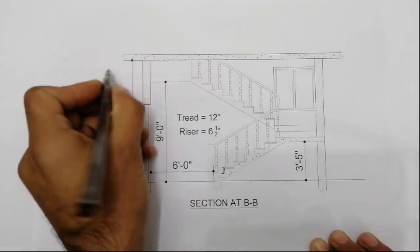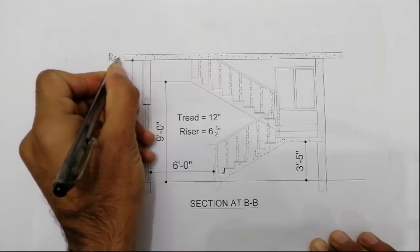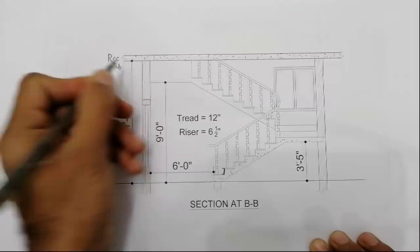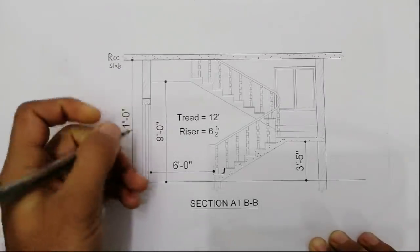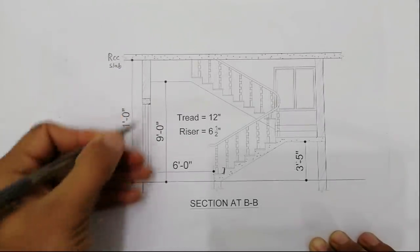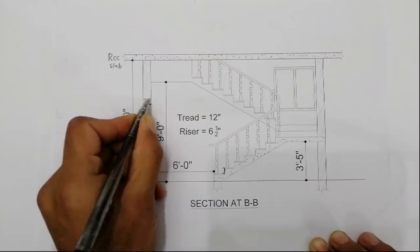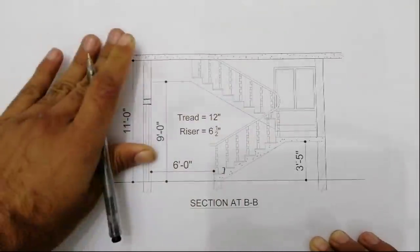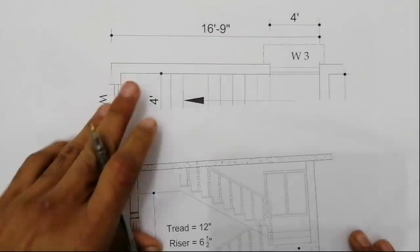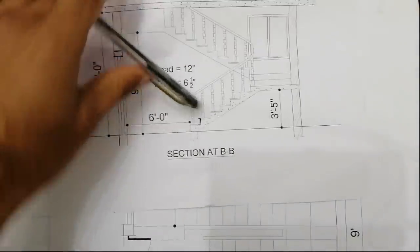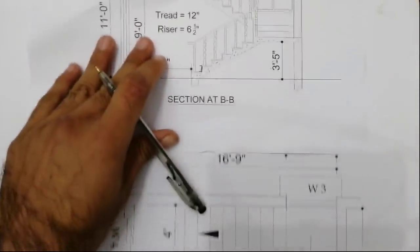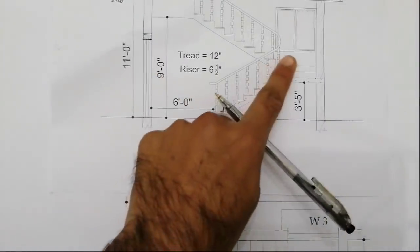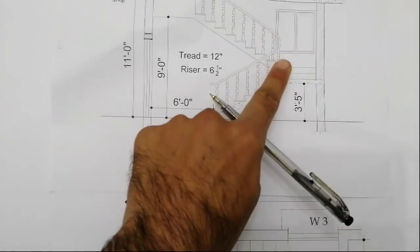This is an RCC slab — you can see this is the RCC slab. Here are some details about the door and its lintel beam. This is the cross section view, and you will understand it easily. This is window 3, and this is the front elevation and cross section — you can see the front elevation.